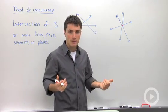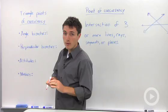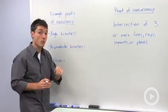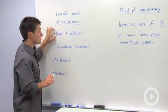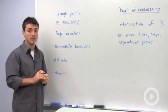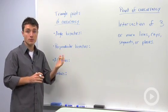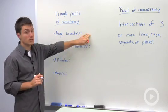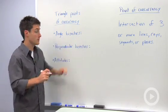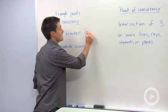Why does this matter? It matters in triangles when talking about four types of points of concurrency. The first is formed by the three angle bisectors. If you construct the three angle bisectors of a triangle, you're constructing a special point of concurrency known as the incenter.